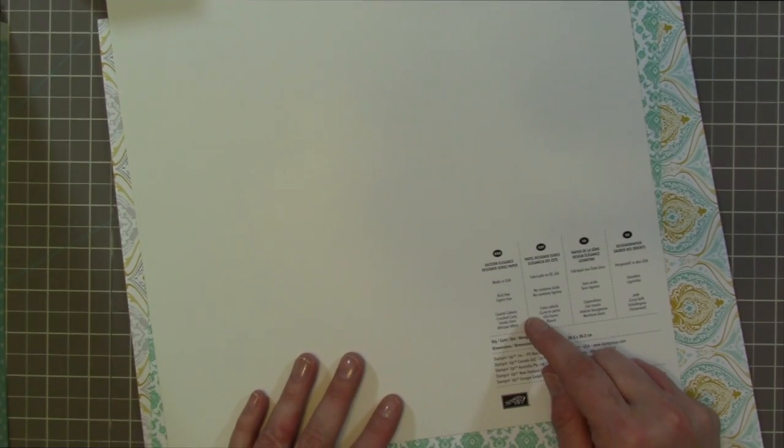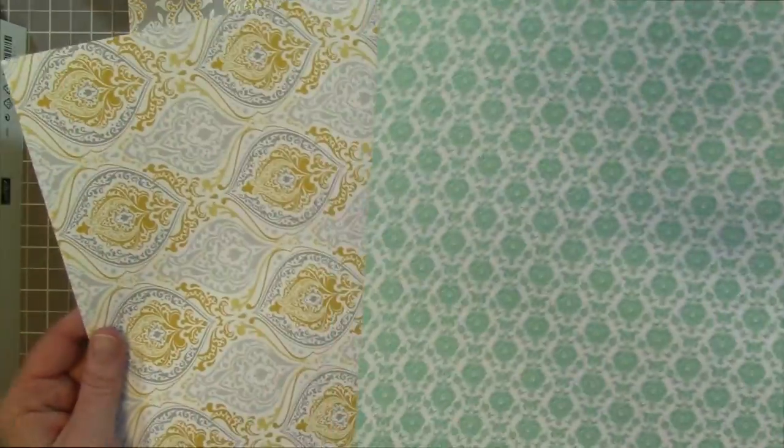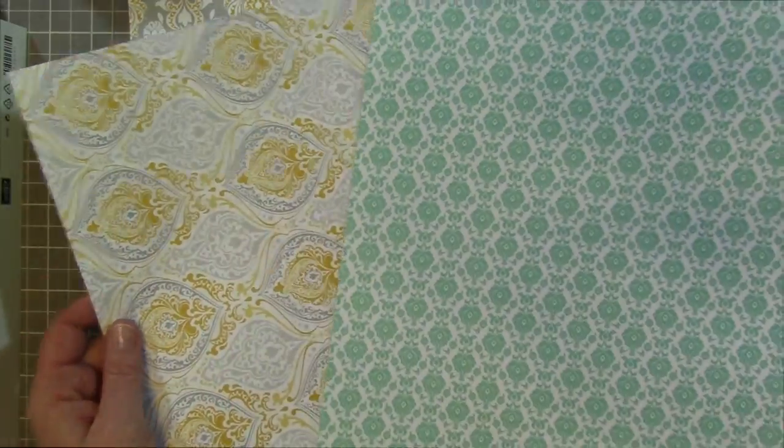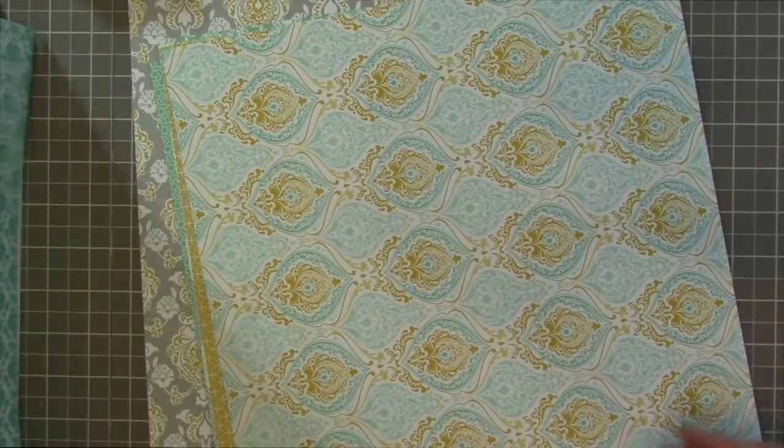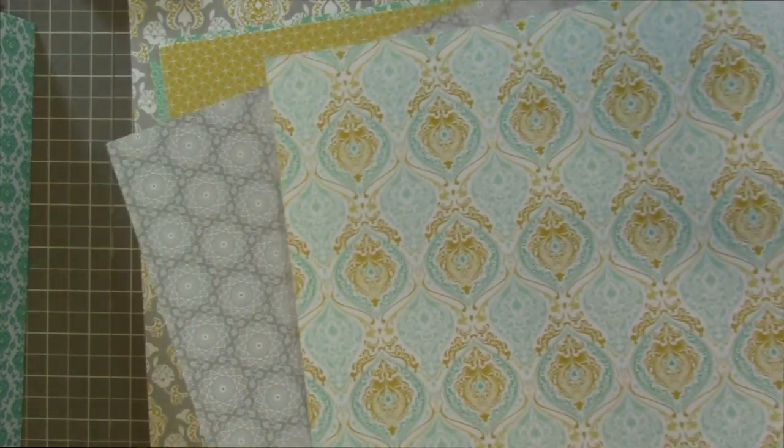This next one is Eastern Elegance. Coastal Cabana, Crushed Curry, Smoky Slate, and Whisper White are the colors. So we have our front and backs again. I really like the Smoky Slate. That's a really nice shade. It's gray.